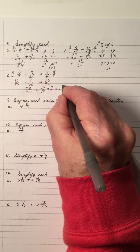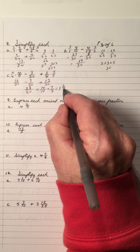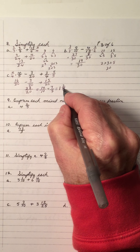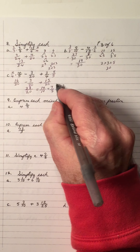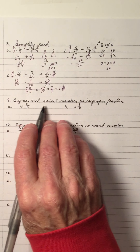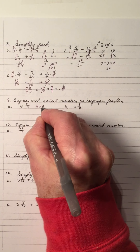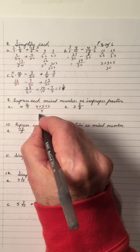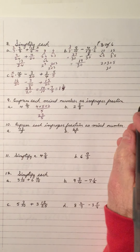7 over 5 as a mixed number: 5 goes into 7 once with 2 left over, so it's 1 and 2 fifths. Express each mixed number as an improper fraction. 4 and 2 fifths: 4 times 5 plus 2 over 5 — that gives 22 over 5 as an improper fraction.